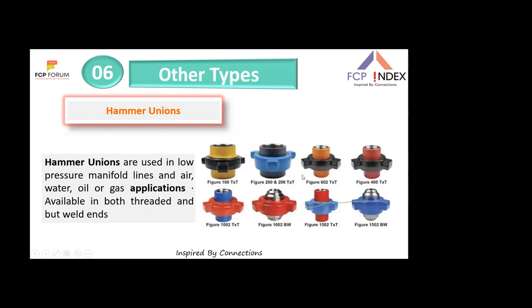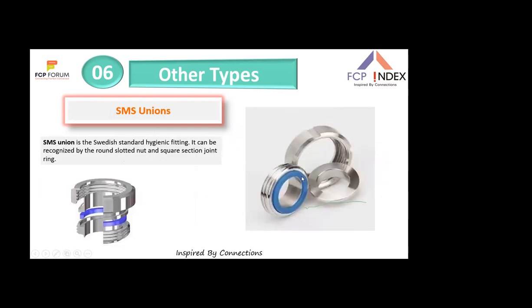Hammer unions are used in low-pressure manifold lines for air, water, gas, and oil applications, common in the oil and offshore industry. They are available in both threaded and butt-weld connections. In India, NPT male connections are typically used to connect hose ends into hammer union fittings. They come in various pressure figures — Figure 100, 200, 400, 600, 1500 — and a color coding system applies.